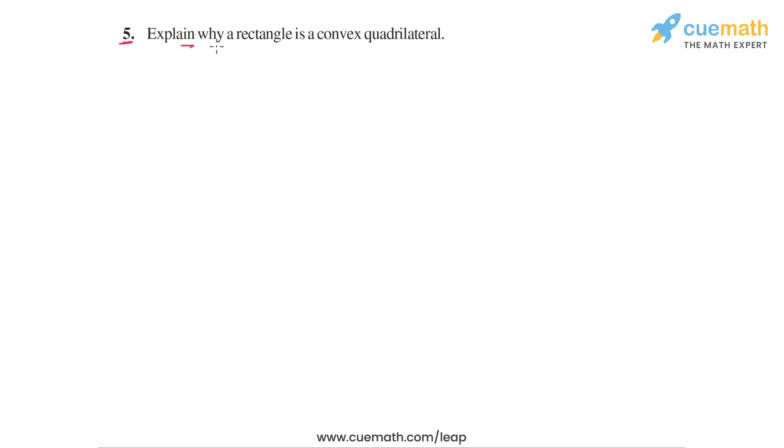Question 5 says explain why a rectangle is a convex quadrilateral. So what does this term mean, convex quadrilateral? In general, what do we mean by a convex polygon?